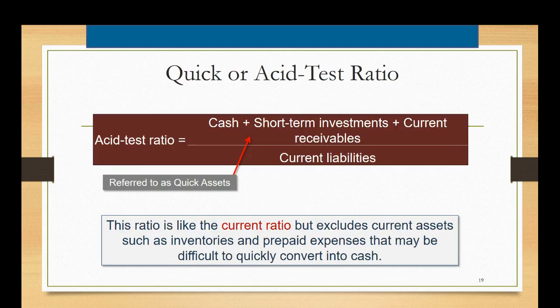The second liquidity ratio is called the quick or acid test ratio. As you'll notice the denominator is the same as before, current liabilities, but the numerator is the three most liquid assets that a company has which is cash, short-term investments, and current accounts receivable.